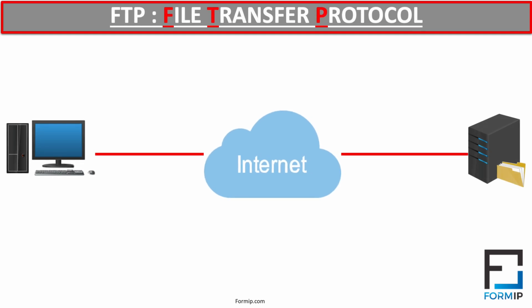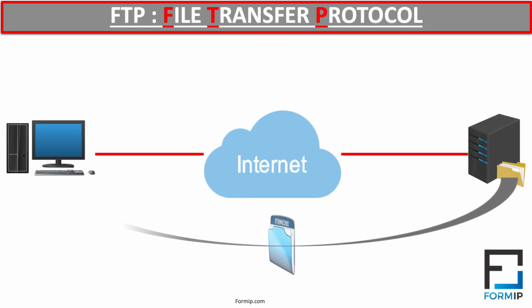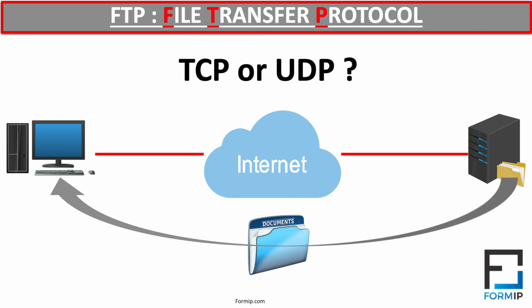Now let's talk about FTP, which is a File Transfer Protocol. It allows the exchange of files between two computers — more precisely, between a server and a client. There are several ways to transfer files via FTP; for example, you can use your internet browser or FTP software. It is important to note that FTP is a connection-oriented protocol. So, does it use TCP or UDP? To transfer files, FTP uses TCP.